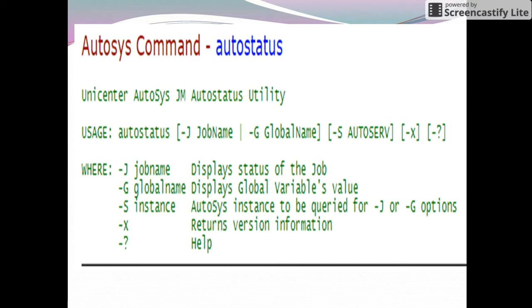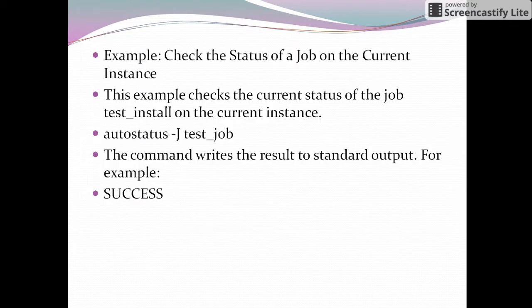If the job is running on another instance, we have to give the instance name. For example, if test_job is running on a pre-prod instance named PRD, we can use the option -s PRD. Then it will return the status of that job on that instance.